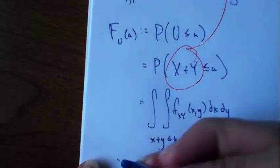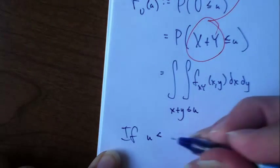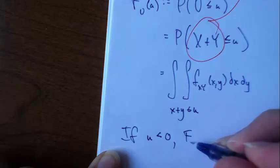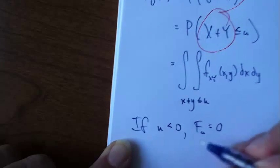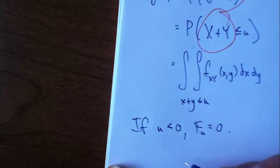Of course, if u is less than 0, this means the CDF has to be 0. I think that makes sense, because both of those demands x and y have to be positive or non-negative anyway.